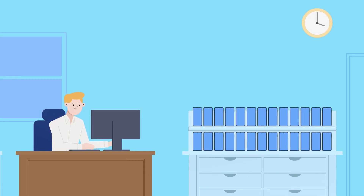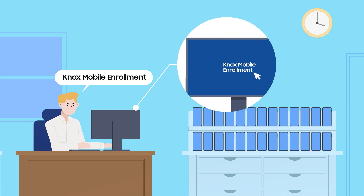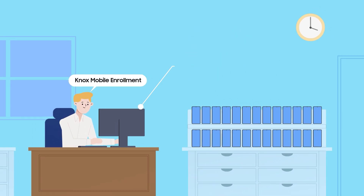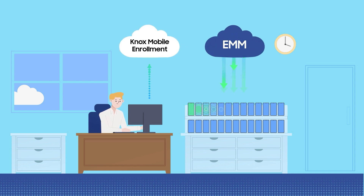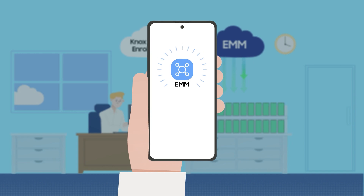When IT admins create profiles using the Knox Mobile Enrollment Console and assign them to devices, the devices are enrolled into EMM after automatically installing the EMM app during the setup wizard process in the initial boot phase, even after factory reset.